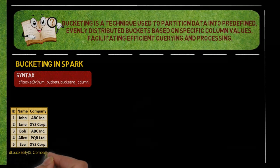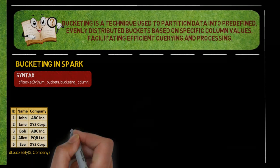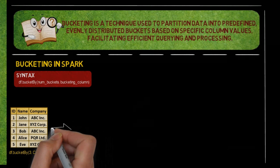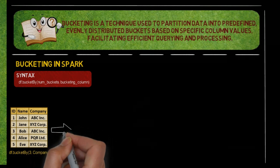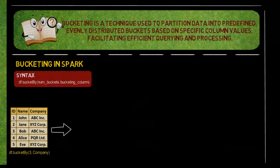Consider a table with columns ID, name, and company. The table contains five rows. Suppose we want to bucket the data based on the company column into three buckets.